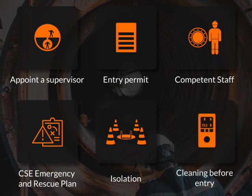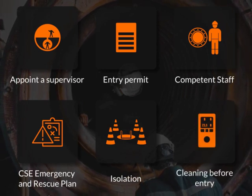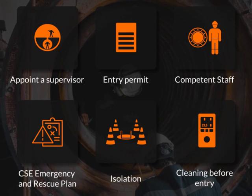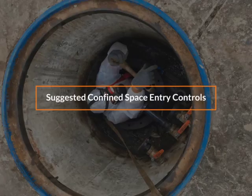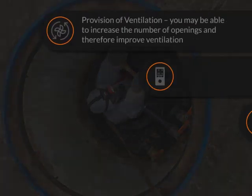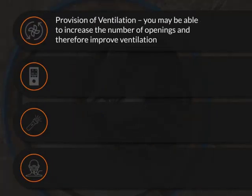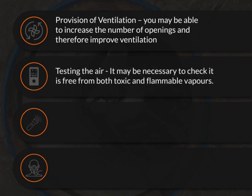Cleaning before entry – it may be necessary to ensure fumes do not develop while the work is being done. Provision of ventilation – you may be able to increase the number of openings and therefore improve ventilation. Testing the air – it may be necessary to check it is free from toxic and flammable vapours.